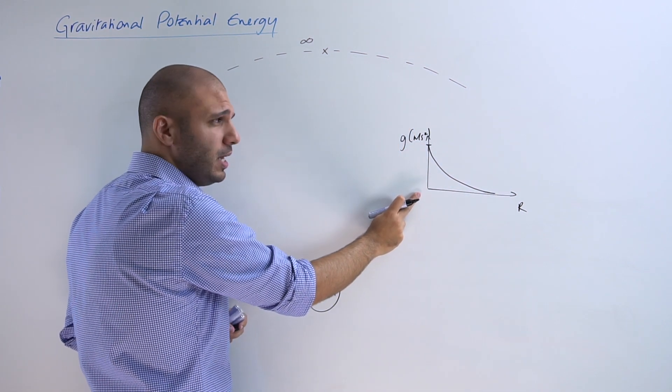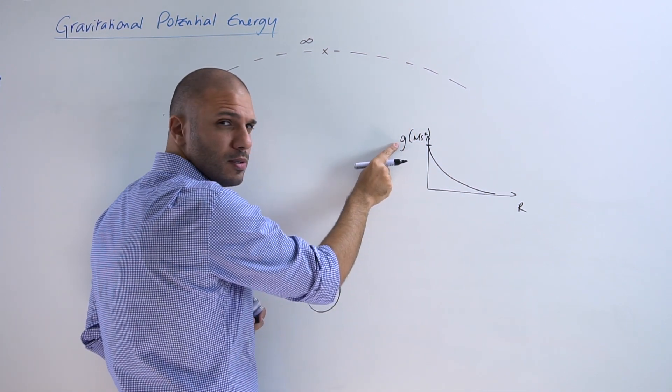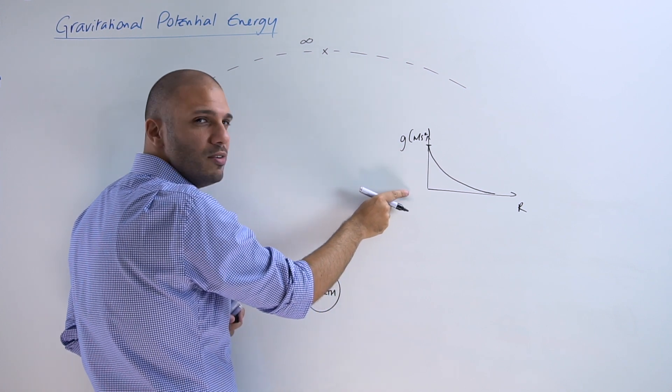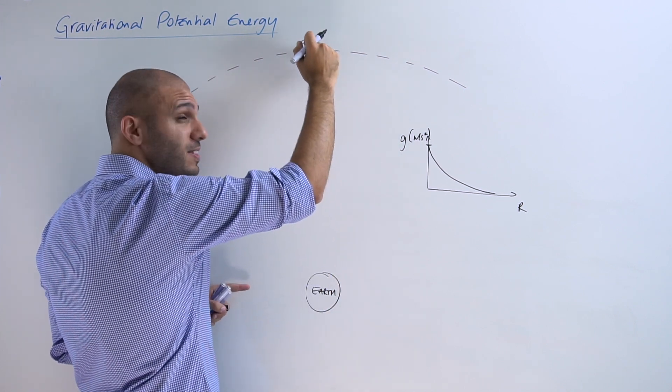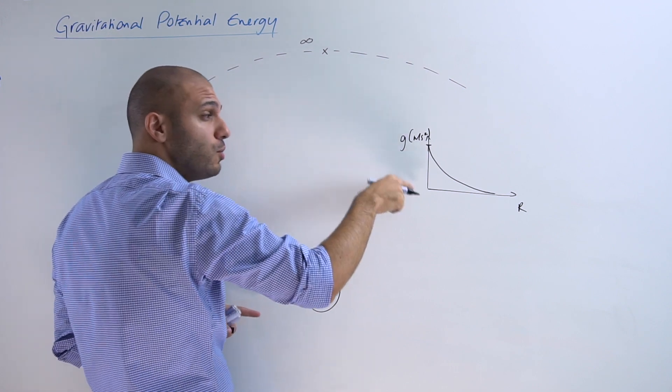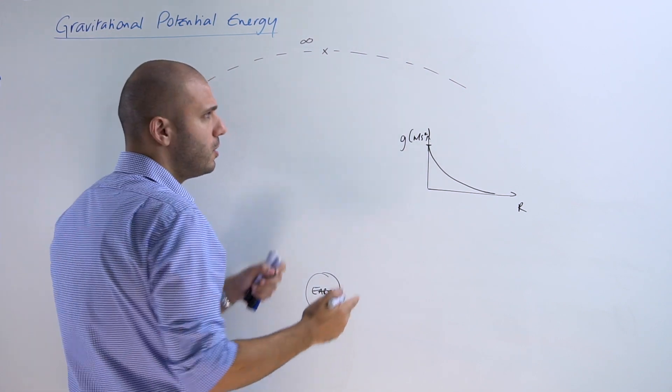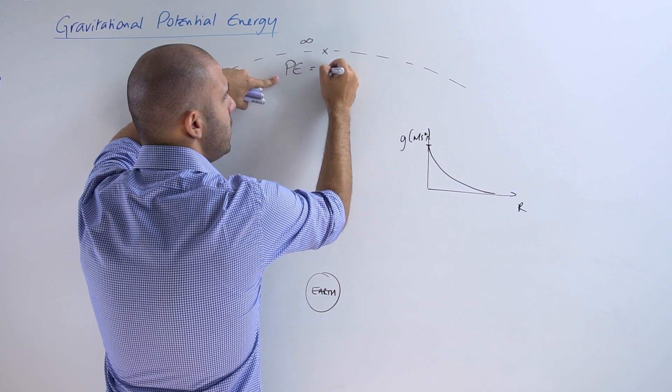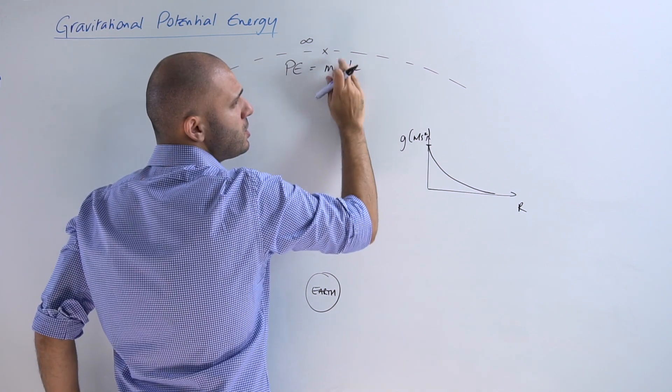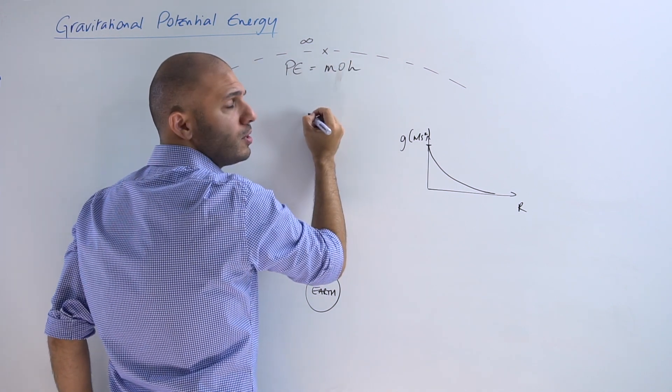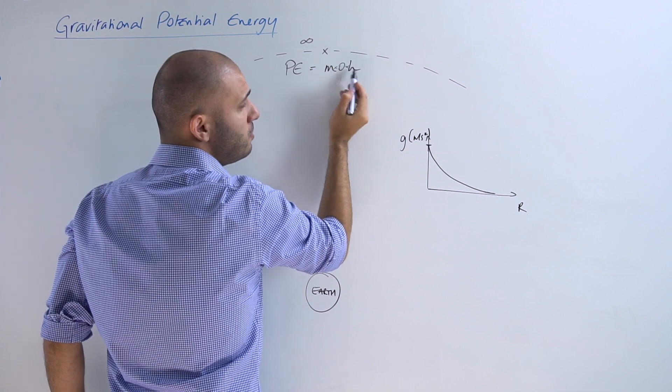Now if g is approaching zero and the further away this point is the closer to zero that value becomes, then the value for potential energy, if this is approaching zero, then anything multiplied by zero is going to become zero.